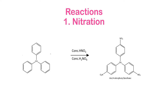Now we will discuss reactions of triphenylmethane. One prominent reaction is electrophilic aromatic substitution at the benzene rings. When triphenylmethane is reacted with nitrating agents — concentrated H2SO4 and nitric acid — it gives a para-substituted product, with all three benzene rings receiving a nitro group at their para positions. There are also several reactions that occur at the central carbon.